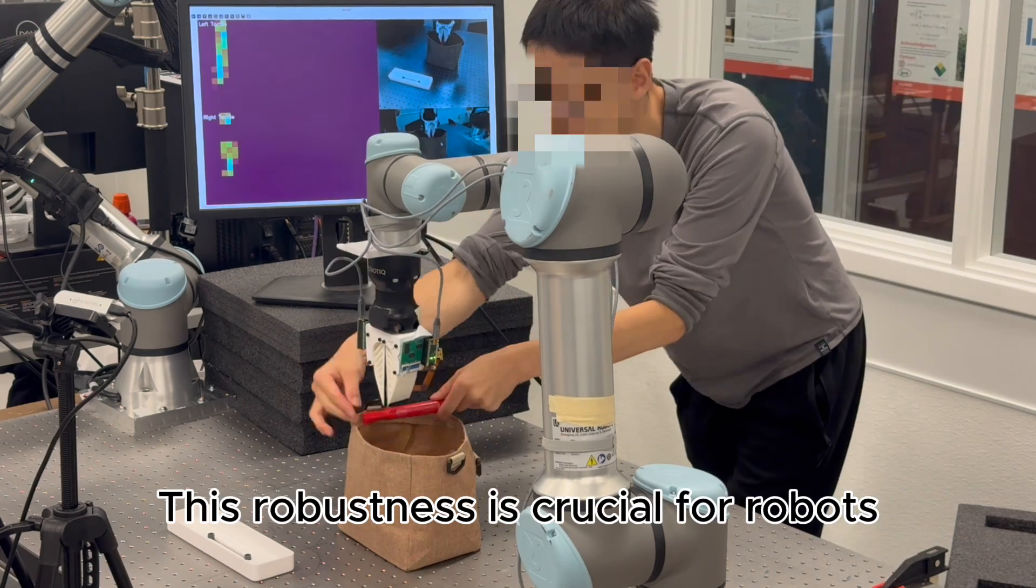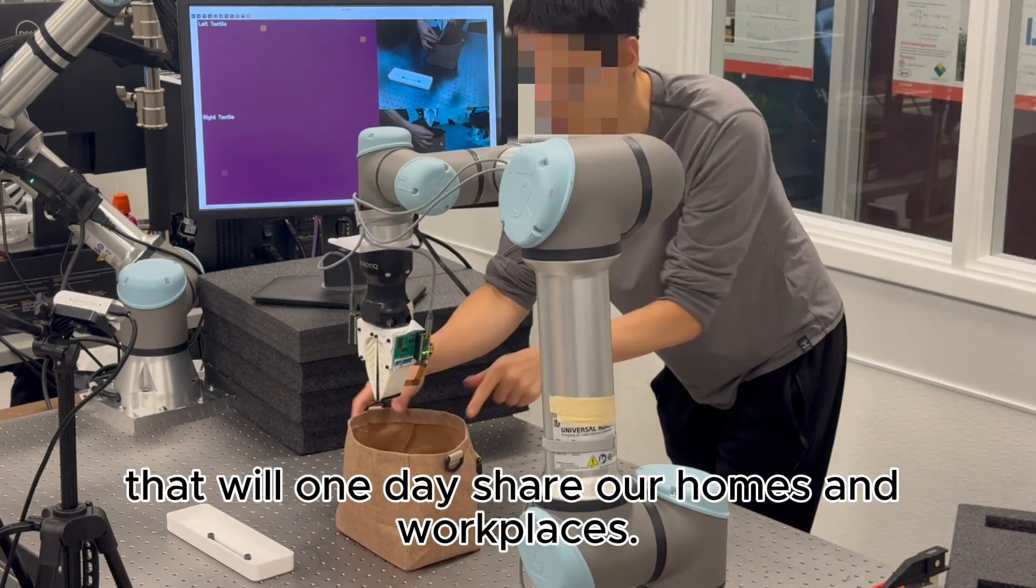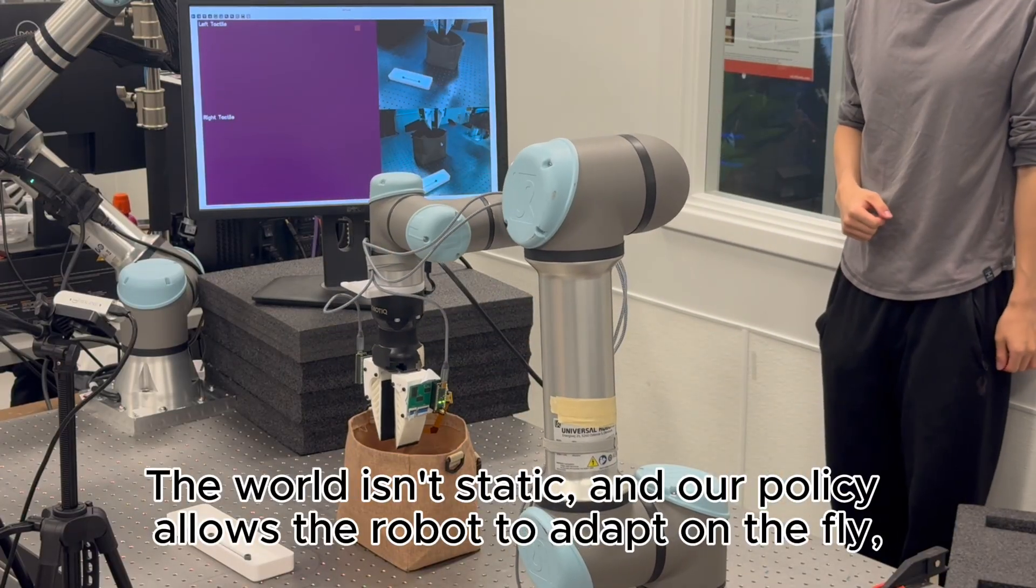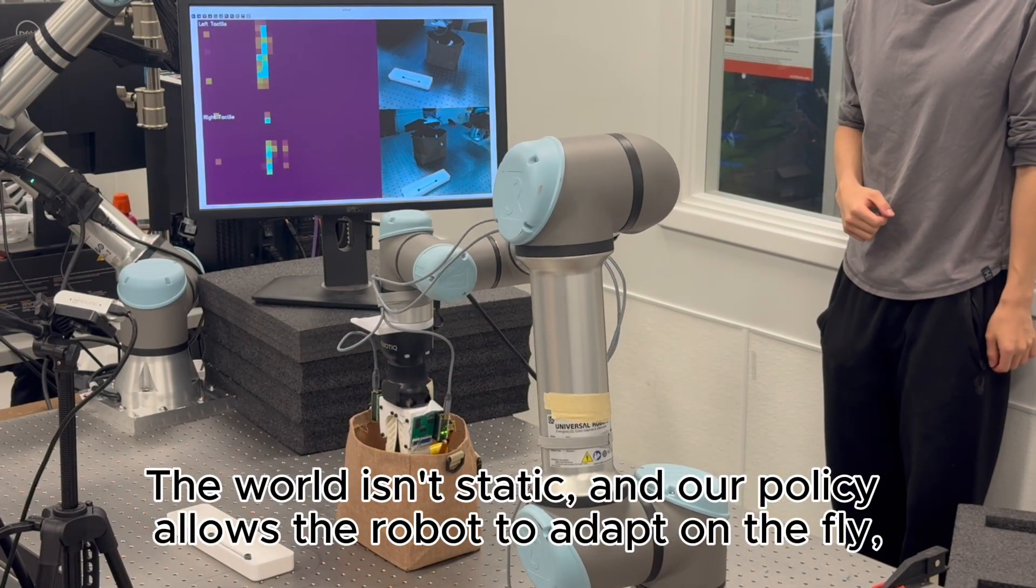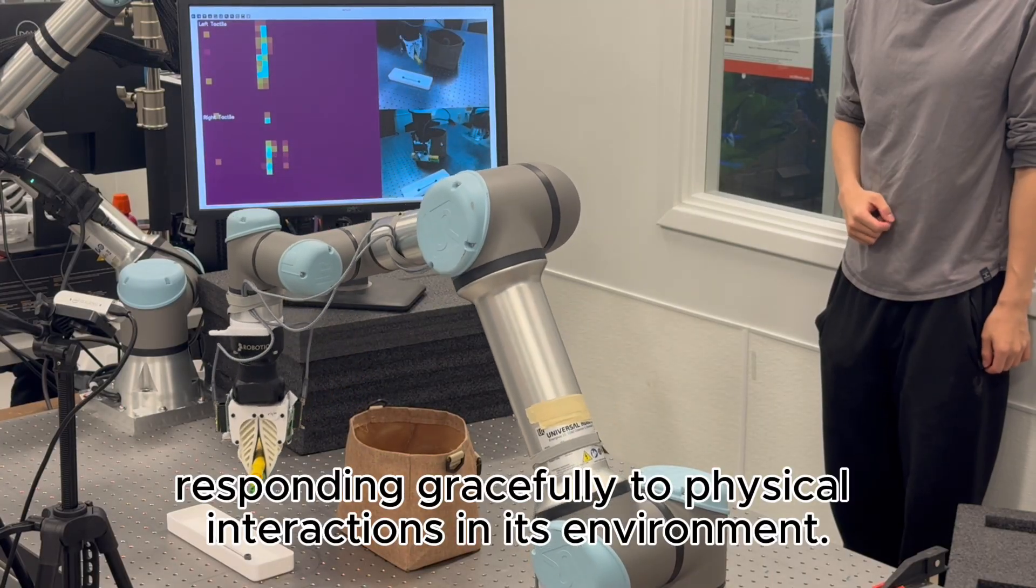This robustness is crucial for robots that will one day share our homes and workplaces. The world isn't static, and our policy allows the robot to adapt on the fly, responding gracefully to physical interactions in its environment.